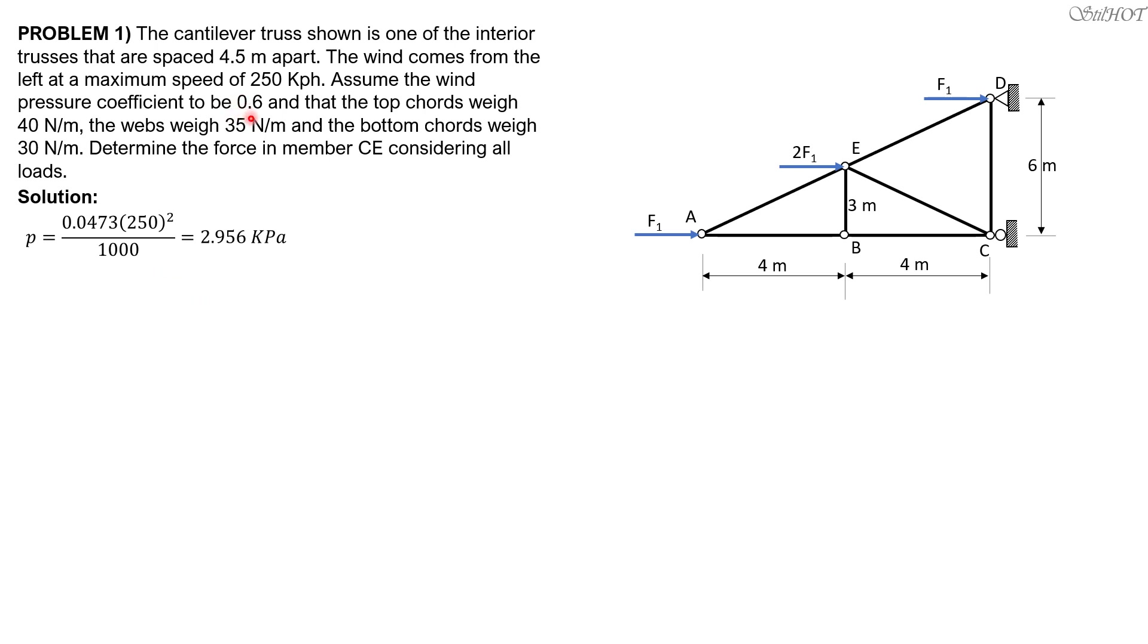F1 therefore is wind pressure coefficient 0.6 times the pressure times the tributary area, which is the spacing 4.5 meters by 1.5, which is half of 3. So this is the tributary height. Then for the center joint, 3 meters. F1 therefore is 0.6 times 2.956 times 4.5 times 1.5, so 11.972 kilonewtons. 2F1 is times 2 of that, so 23.944 kilonewtons.